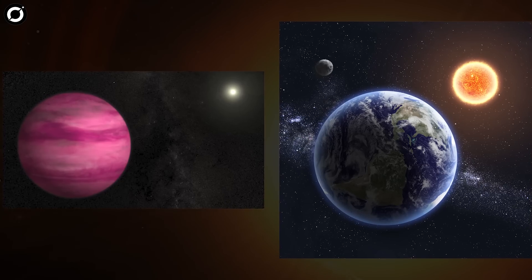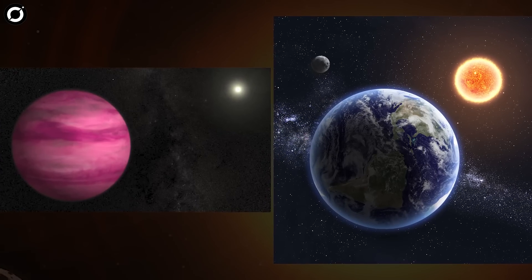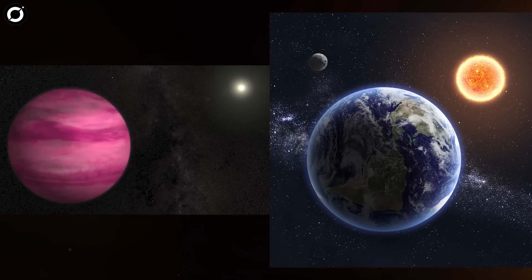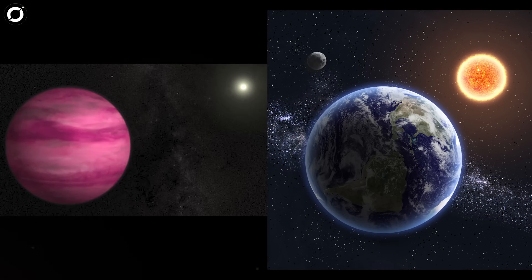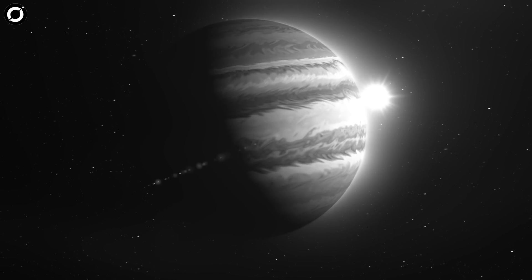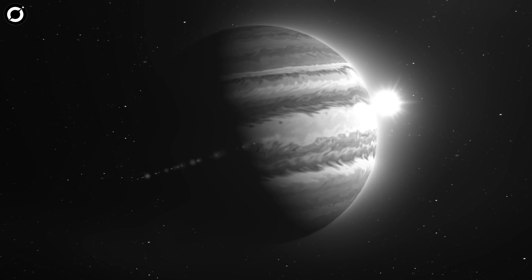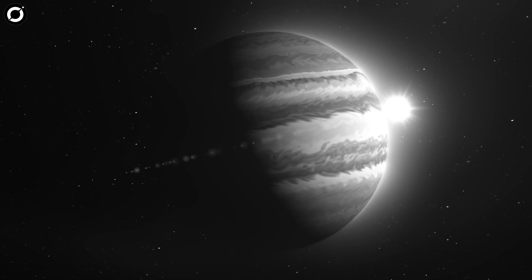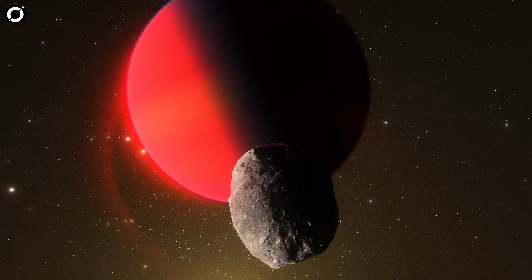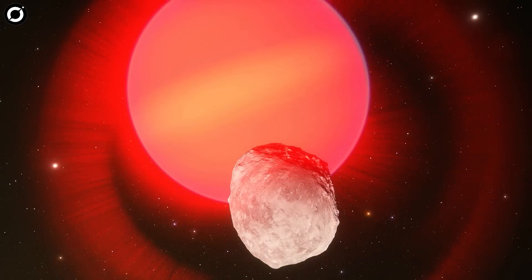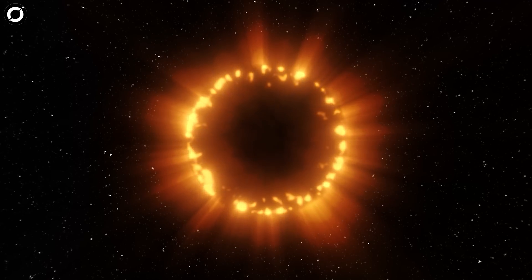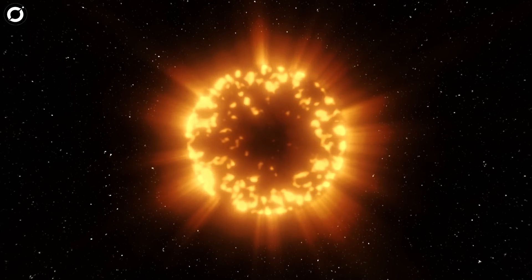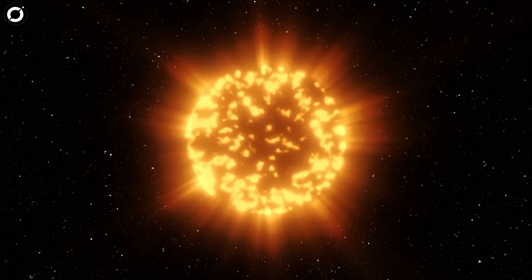HIP 65426 b orbited about 100 times farther from its star than Earth does the sun, taking 630 years to complete an orbit. This distance meant it's easier to see the planet against the glare of the star. That, coupled with the planet's extreme heat and brightness—it had a scorching temperature of about 900 degrees Celsius, a fever left over from its formation just 14 million years ago—made it a prime target for direct imaging.